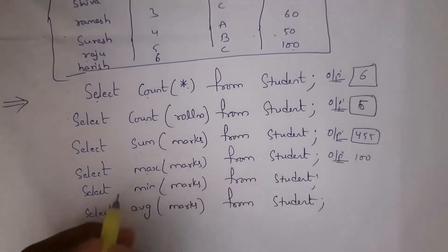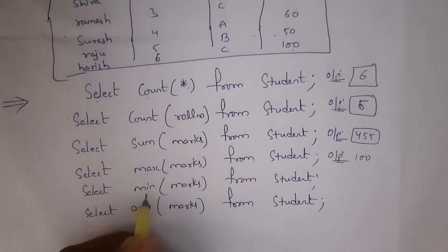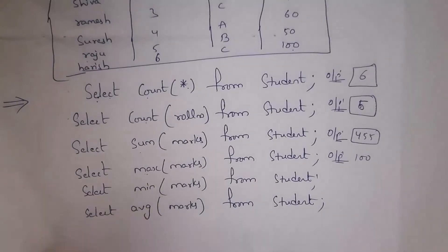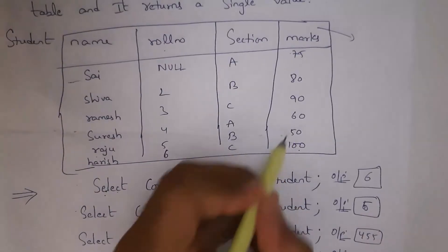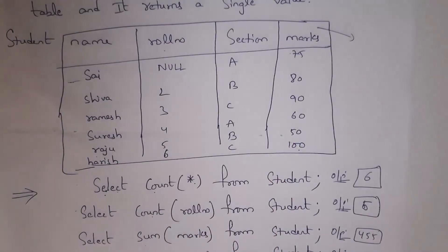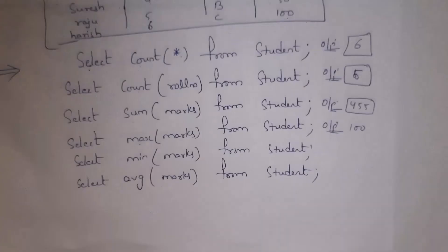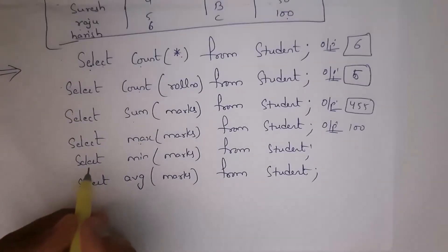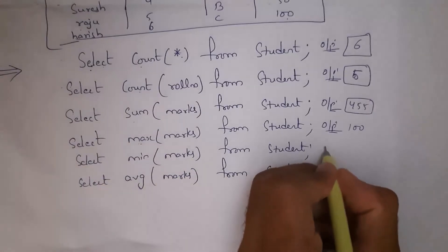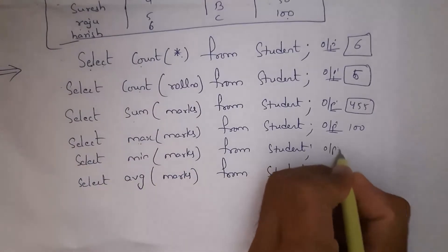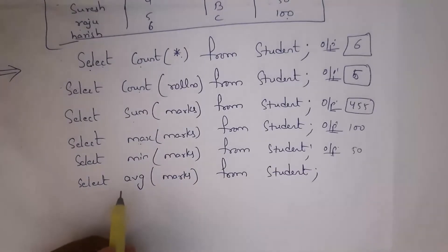In place of MAX, I write MIN to identify the minimum value. The minimum value in the table is 50, so writing SELECT MIN(marks) FROM student will display the output: 50.